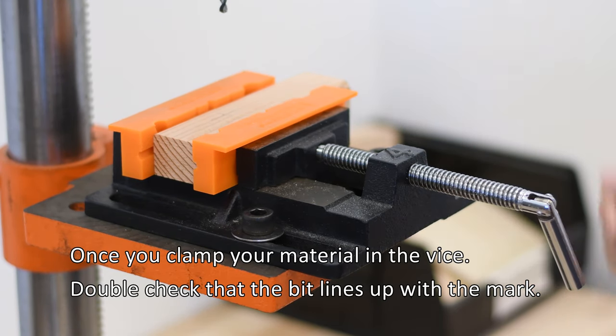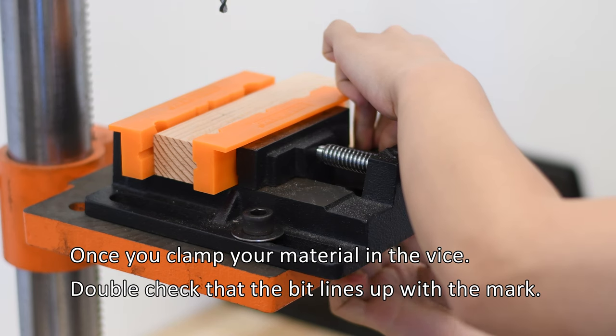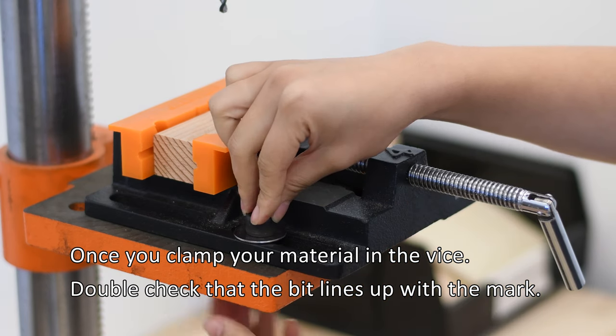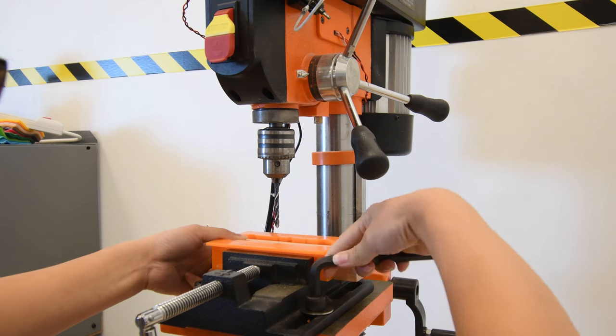Once you clamp your material into the vise, double check that your bit is aligned to your mark. Secure the vise to the table with the provided screws.